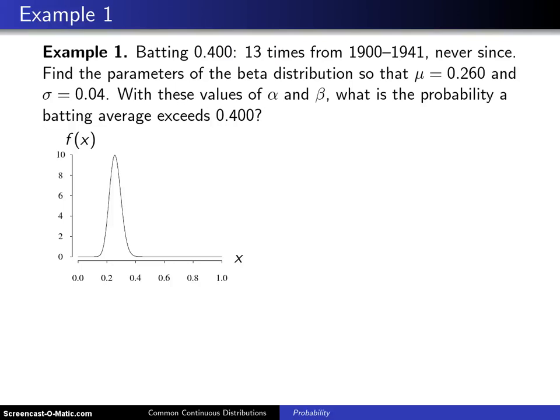Here is an application of the beta distribution. Batting .400 has occurred 13 times between the years 1900 and 1941 and has never happened again after those years. Now there may be some explanations having to do with changes in the rules, changes in the strike zone, etc. But this has always been a curiosity to me that you had so many .400 hitters between 1900 and 1941 and it's been so long since we've had one again.